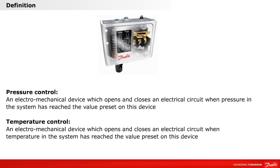Before we start looking at the basic applications, let's review the definition of a pressure and temperature control. A pressure control is an electromechanical device that opens and closes an electrical circuit when the pressure has reached a preset value. A temperature control is an electromechanical device that opens and closes an electrical circuit when the temperature has reached a preset value.